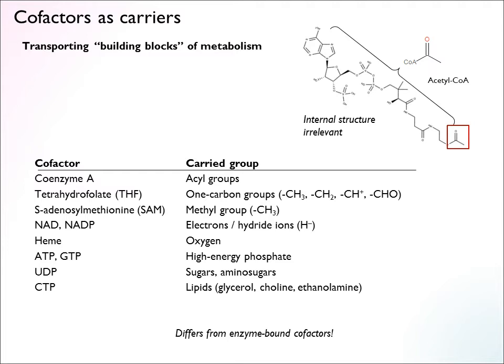Then you have the electron carriers. NAD and NADP carry hydride ions — an important form of energy from metabolic pathways. Heme carries oxygen. ATP and other triphosphates carry high-energy phosphate groups. UDP — uridine dinucleotide phosphate — is an important carrier for sugars and amino sugars in some pathways. CTP — cytosine triphosphate — is important in lipid metabolism, where it carries groups used to build lipids. There's a variety of these, and it's a useful perspective to think of them as transporters and the building blocks as the material that makes up metabolism.